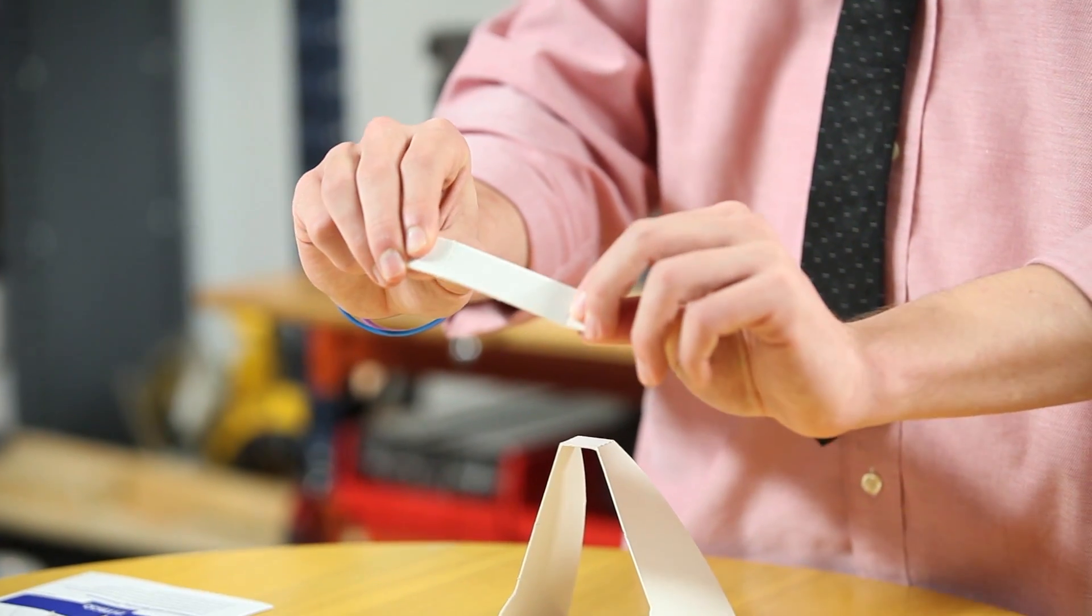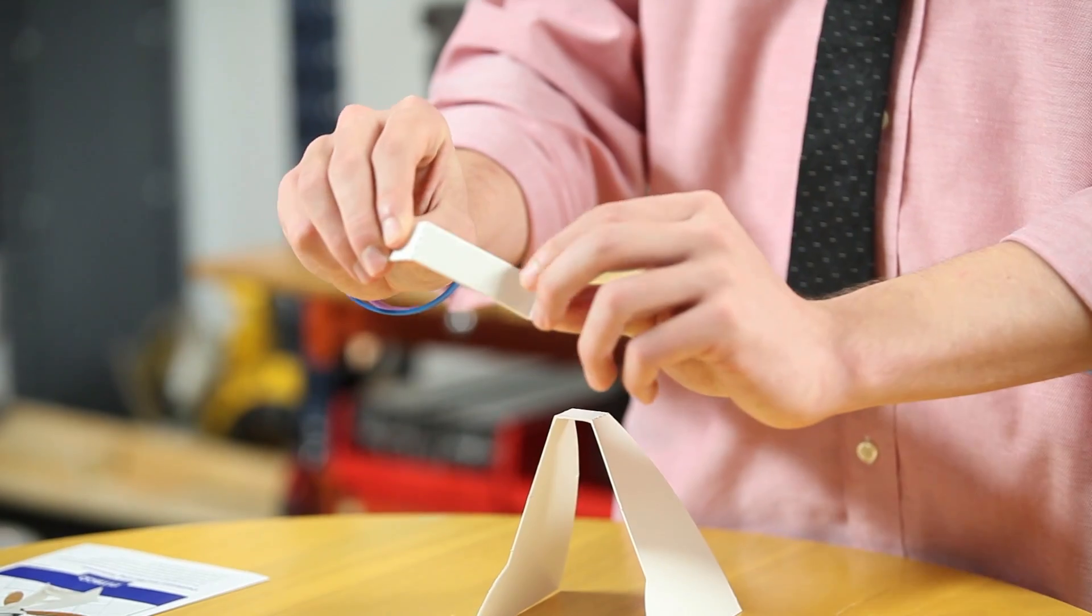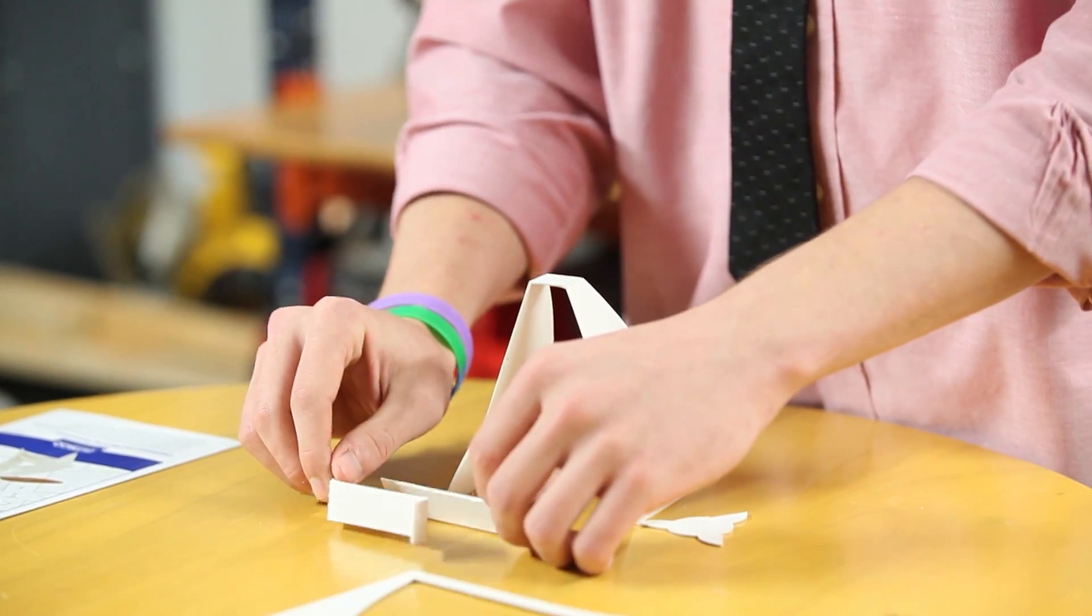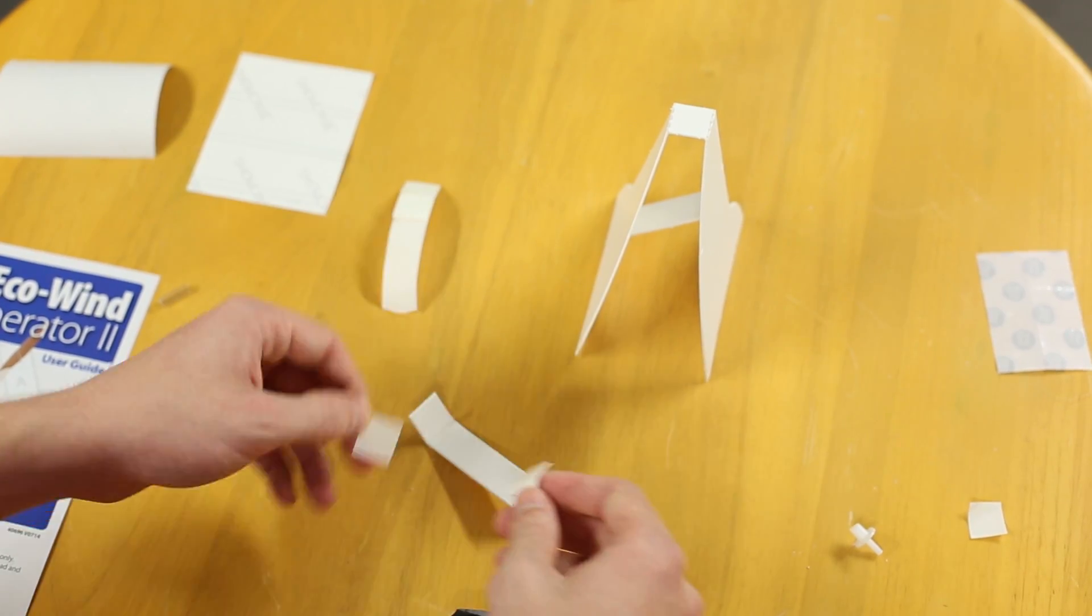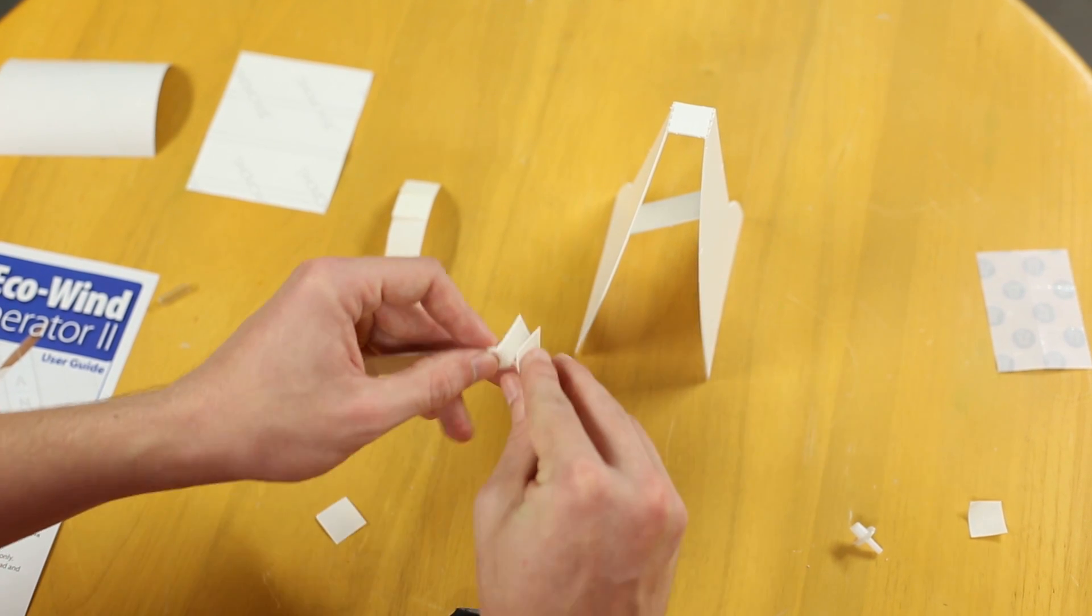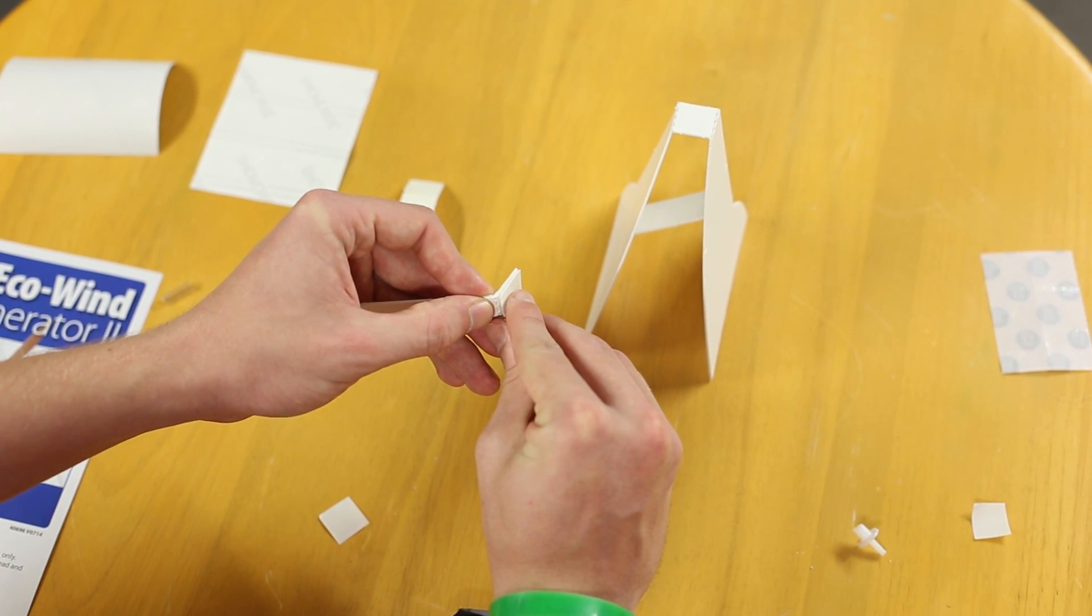Then you're going to take the two rectangular pieces and you're going to bend them in opposite directions at each end. Next you're going to remove the foam tabs and place them at the ends of each of the rectangular parts.